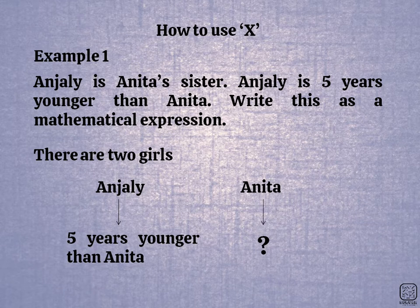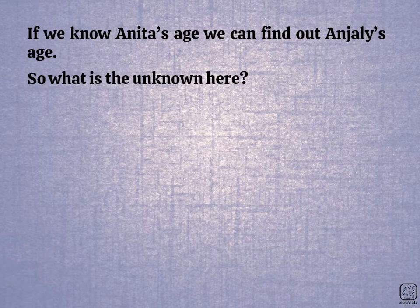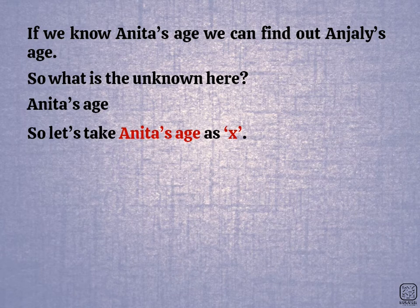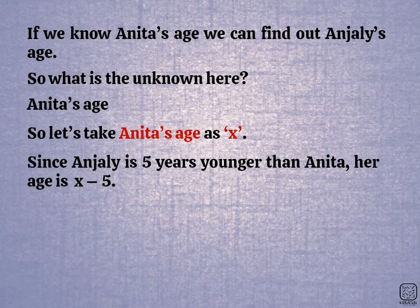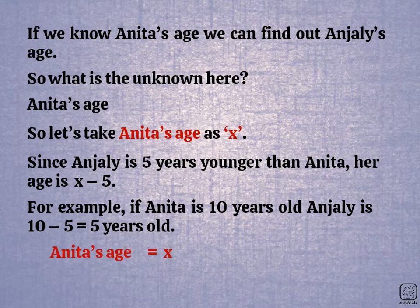How do we use an unknown value? We will put it in place. When we put the age, we call it x. The age of Anitta is x, and 5 is equal to x minus 5, which is equal to x minus 5.